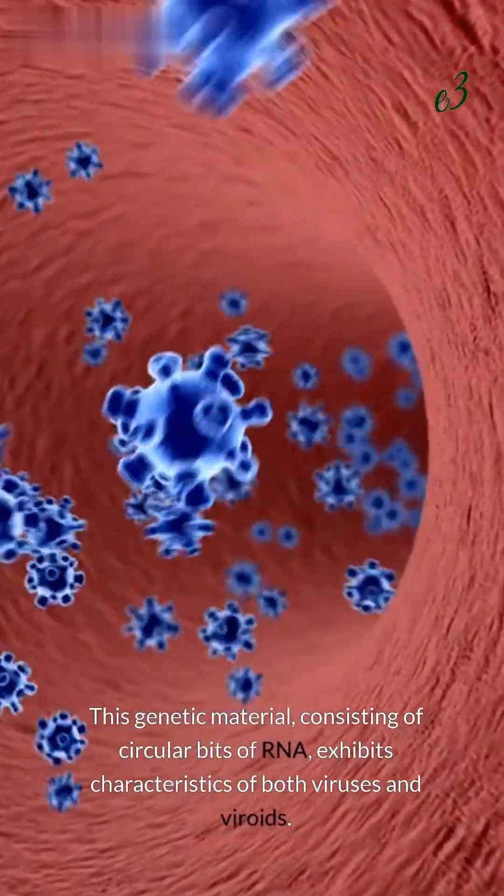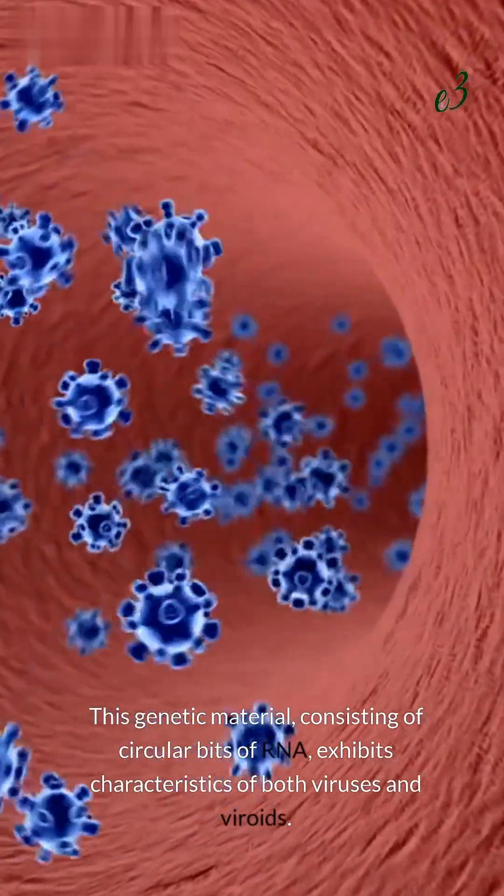This genetic material, consisting of circular bits of RNA, exhibits characteristics of both viruses and viroids.